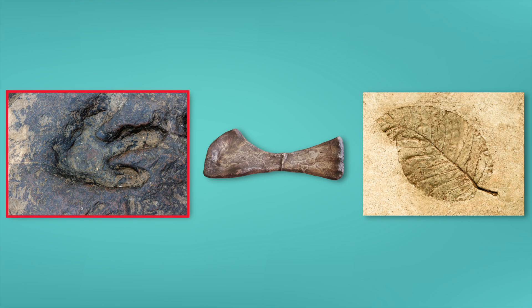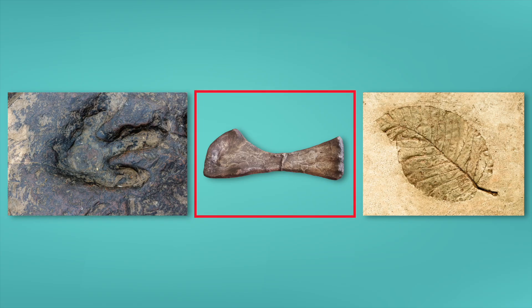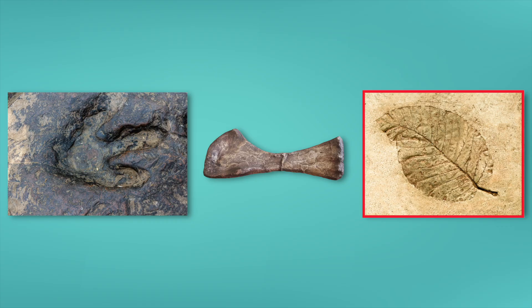Here we have a fossilized footprint. This is a trace fossil, which shows us evidence of this ancient creature's movements. Next is a bone. This is definitely a body fossil, part of the living thing that has been turned to stone over time. And finally, this mold fossil shows the shape of an ancient plant, even though none of the plant's parts are here anymore.